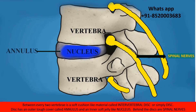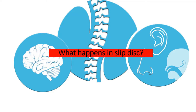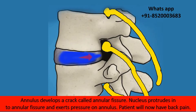Behind the discs are our spinal nerves, which supply the legs. So what happens in a slipped disc? The annulus develops a crack called an annular fissure, and the nucleus protrudes into the annular fissure and exerts pressure on it. Because of this crack, the patient will have back pain.